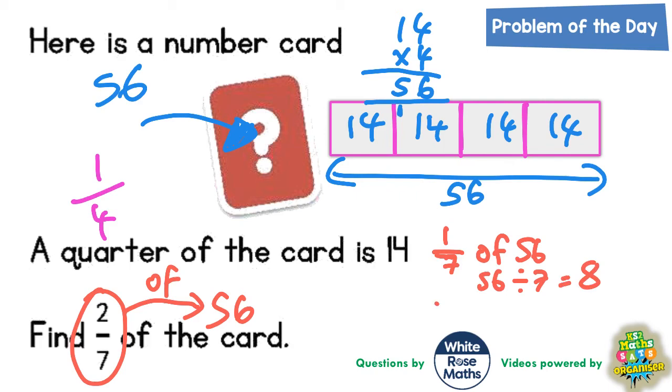So 2 sevenths of 56 is basically this 8 but times by 2. And 8 times by 2 is 16.